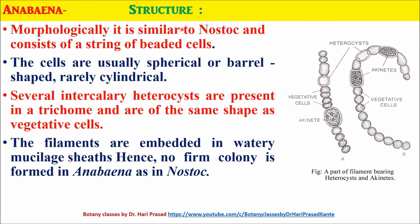Next, about the structure of Anabaena trichome: it is morphologically similar to Nostoc trichome and consists of a string of beaded cells. The cells are usually spherical or barrel-shaped, rarely cylindrical in shape.